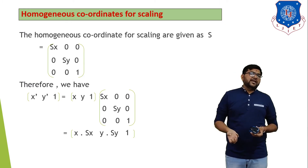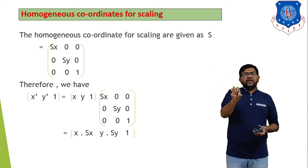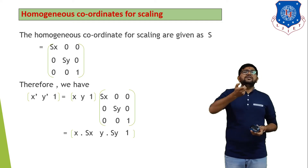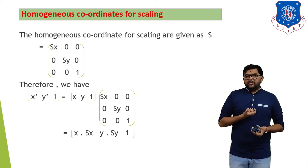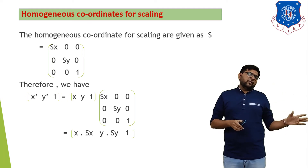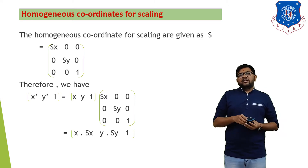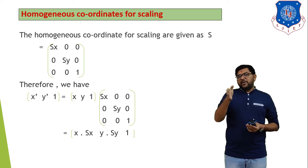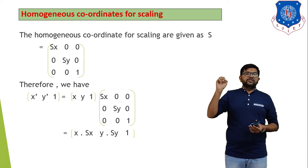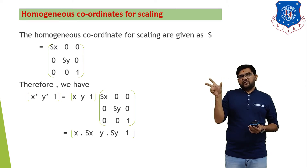Now, homogeneous coordinate for scaling. Scaling means enlarging or reducing the size of any object. We already derived the scaling equation in 2×2 form as [SX, 0 / 0, SY]. Again we add one dummy row and one dummy column, and the equation converts to [SX, 0, 0 / 0, SY, 0 / 0, 0, 1]. This is the equation of the scaling geometric transformation.